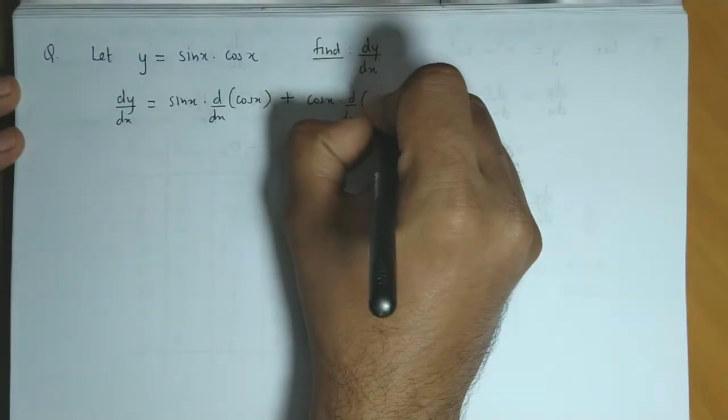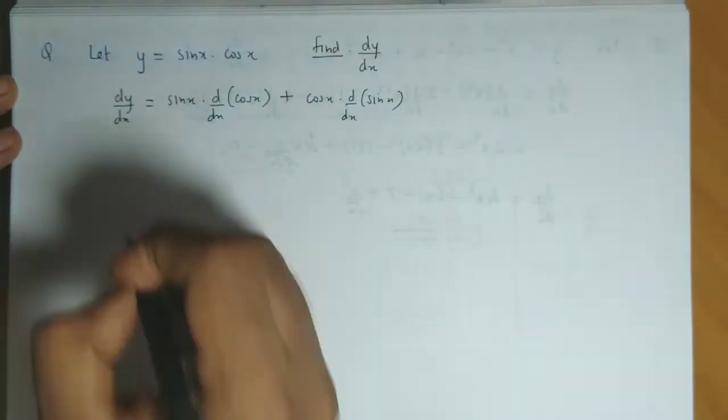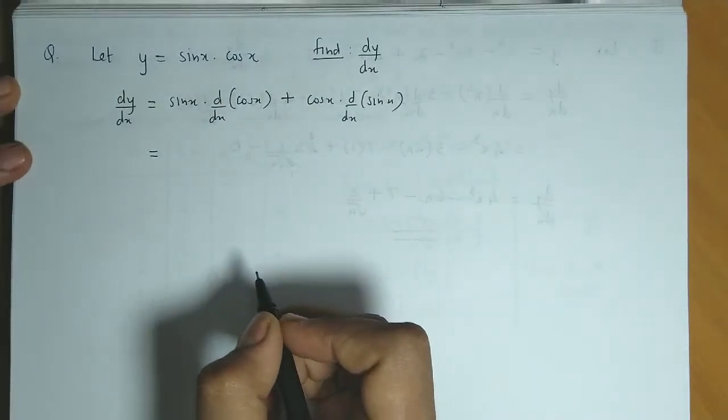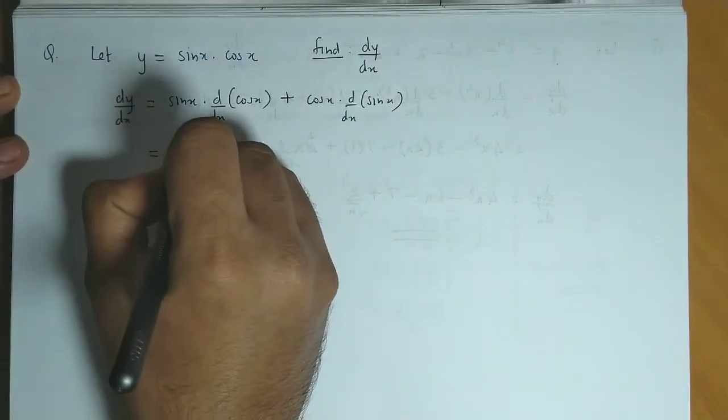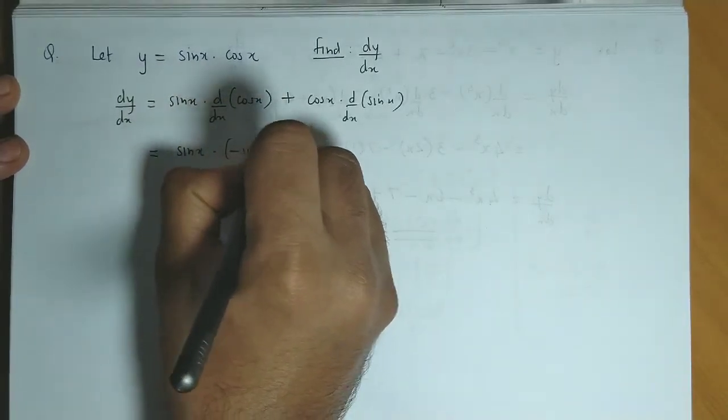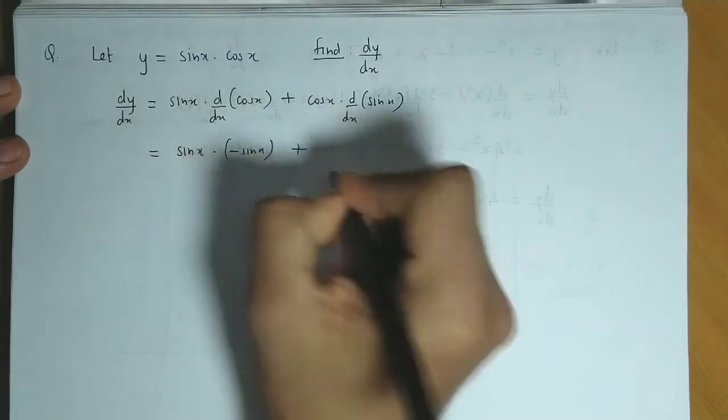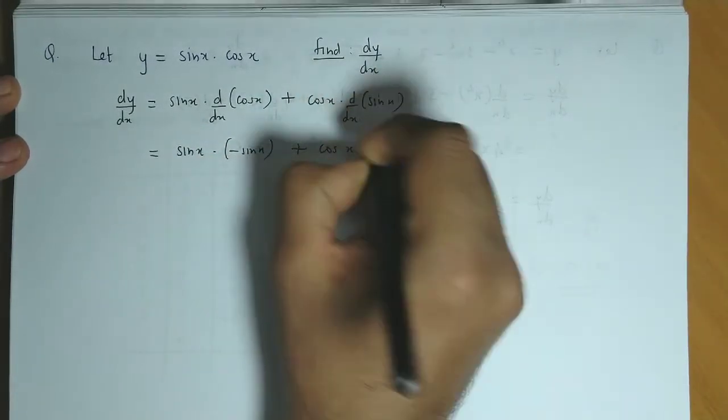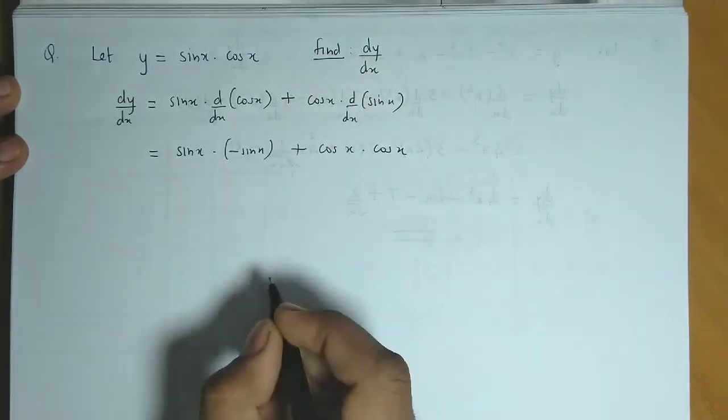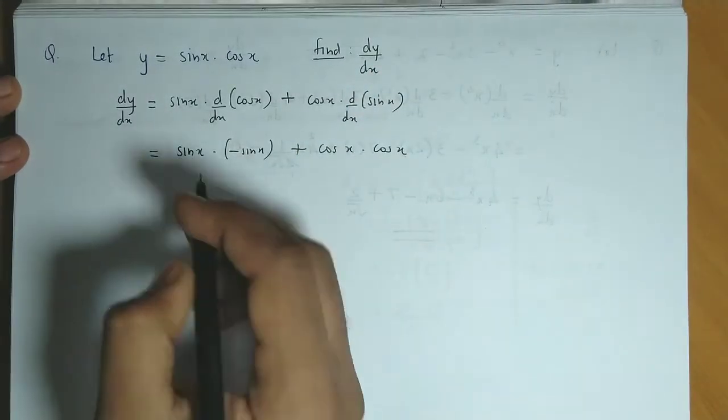Now the derivative of cos x is minus sin x, so we have sin x times minus sin x plus cos x times the derivative of sin x, which is cos x.